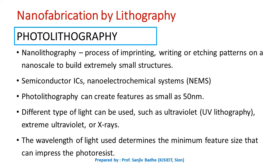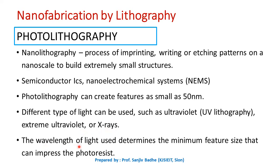In a complex IC fabrication process, the semiconductor wafer will have to go through the photolithographic process many times. In this photolithographic process, different types of light can be used, such as ultraviolet light, extreme ultraviolet light, or X-rays. The wavelength of light used determines the minimum feature size that can impress the photoresist. In short, the minimum feature size depends on the wavelength of light.